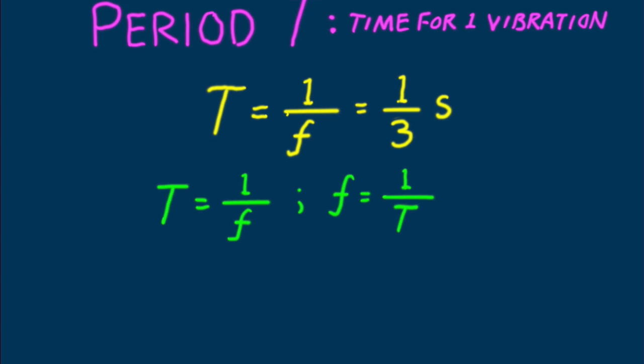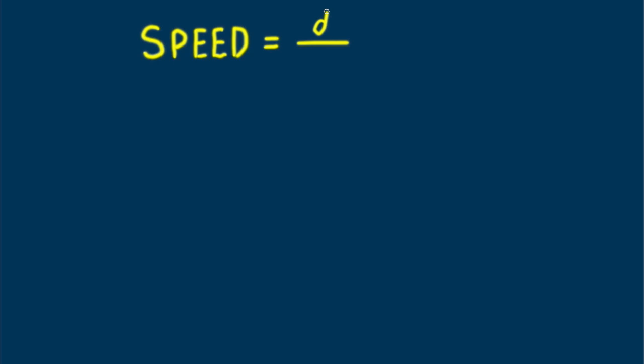The speed of a periodic wave, like any speed, is defined as the distance divided by time. Let the distance be one wavelength. Then the time is one period. So wave speed equals wavelength over period, and knowing one over period is frequency, we see that the equation for wave speed becomes wavelength times frequency.